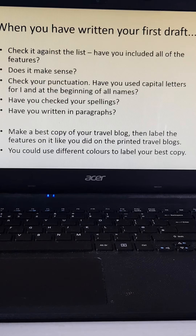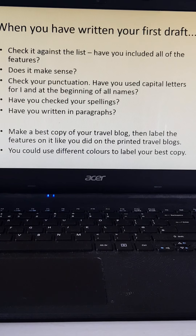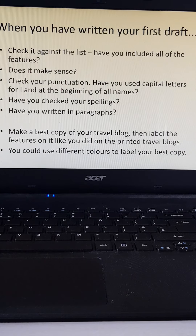When you've written your first draft, I want you to edit and improve it. Firstly, check it against the list — have you included all of the features? Go back to that list of 10 features; if you need to rewind, have a look back. Does it actually make sense? In a first draft you might have missed words out, things might not make sense, or you might have repeated yourself. Check your punctuation: have you used capital letters for 'I' and at the beginning of all names — place names, building names. Have you pushed yourself with punctuation — ellipsis, semicolons, exclamation marks where something's shocking or surprising? Check your spellings. Have you written in paragraphs?